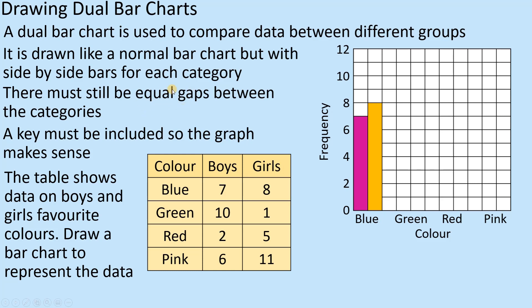Like any bar chart, because these are discrete data - and if you're not sure what discrete means, please look at other videos. Quick summary: discrete means it falls into a category such as blue, green, red, or pink, with no overlap between categories. So with discrete data, there needs to be a gap between the bar groups.